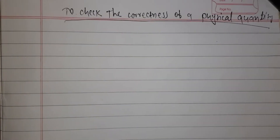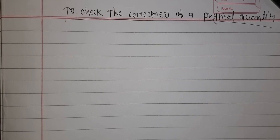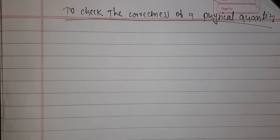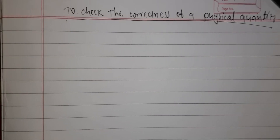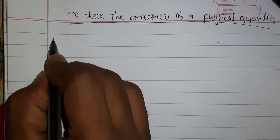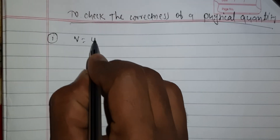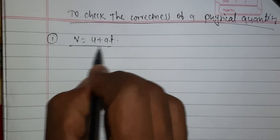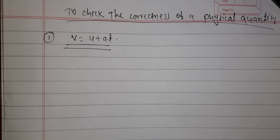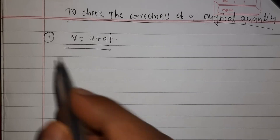Welcome to the new video guys. In this video we are going to discuss how we can check the correctness of a physical quantity. This is the first topic we have to study because we are studying dimensional analysis right now. So first of all we have to see how we can check the correctness of a physical quantity. Suppose we have the equation v = u + at and we want to check if this equation is dimensionally correct or not — we can easily do that by dimensional analysis.